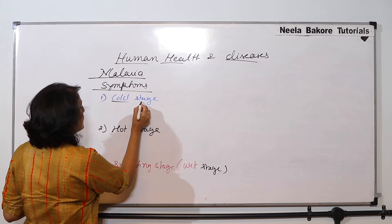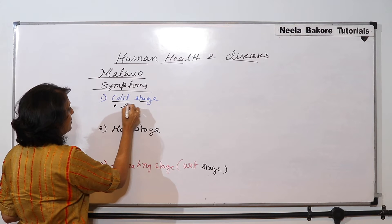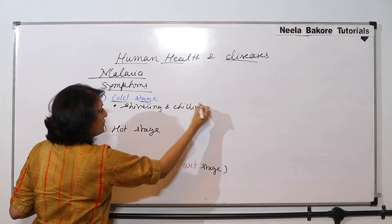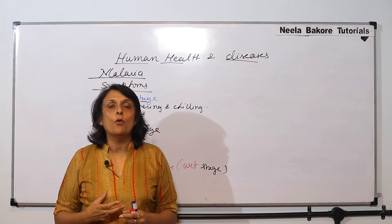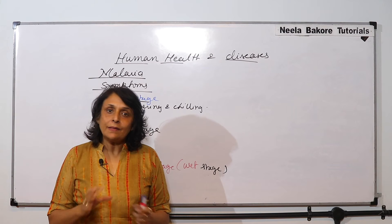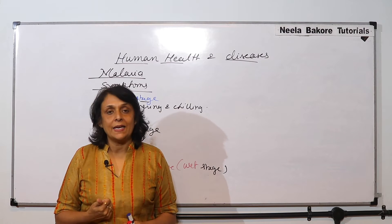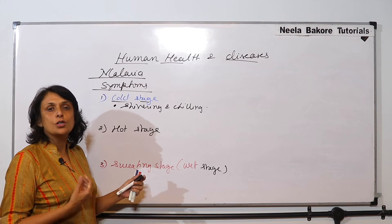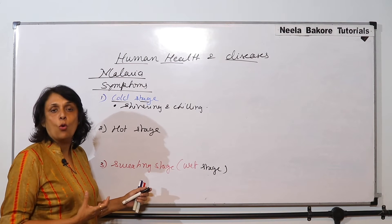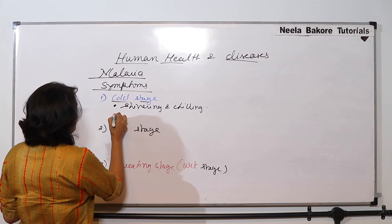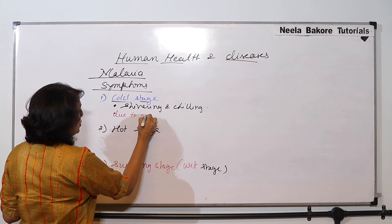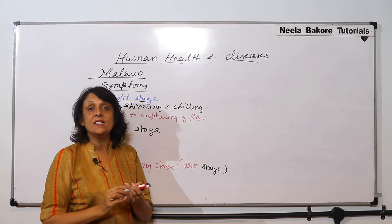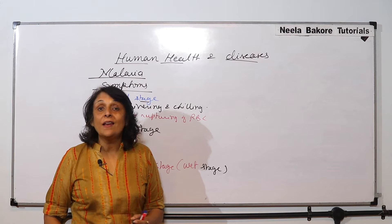In the cold stage, as the name tells us, it is associated with shivering and chilling. The person feels extremely cold — two, three, four blankets or comforters, nothing works — because this feeling is from inside. This is due to the rupturing of RBCs. Whenever an RBC is ruptured, it results in this chill or shivering.